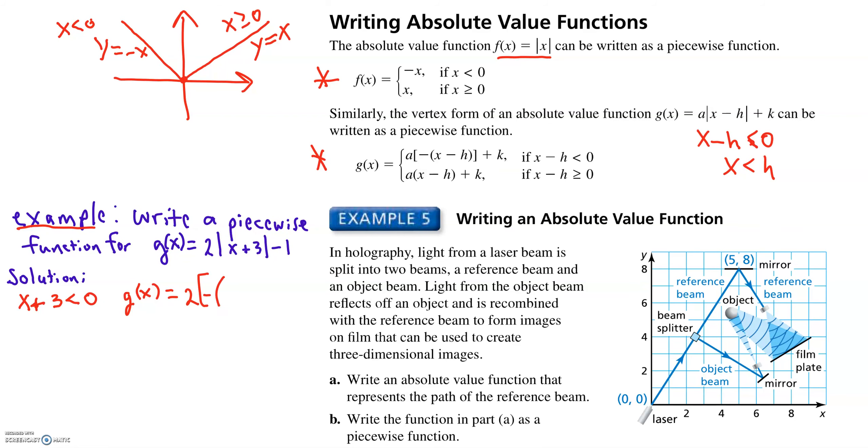if x plus 3 is less than 0, to turn it into a positive, we have to do the opposite of x plus 3.